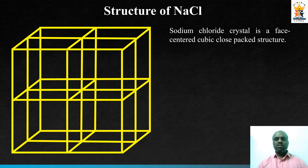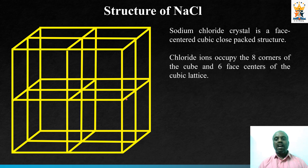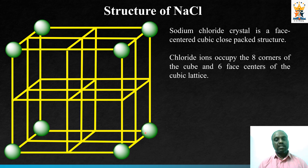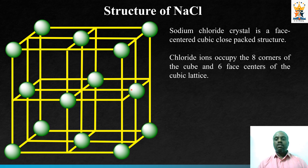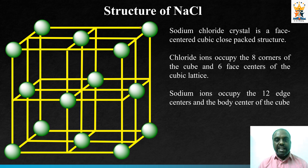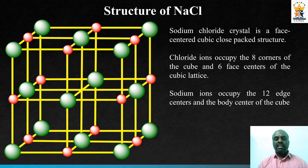Sodium chloride crystal is a face-centered cubic close-packed structure. In an ionic compound, ions are present at particular lattice points. In sodium chloride, the chloride ion occupies the 8 corners as well as the 6 face centers of the cubic lattice. A cube has 8 corners and 6 faces. On the other hand, the sodium ion occupies the 12 edge centers and the body center of the cube.